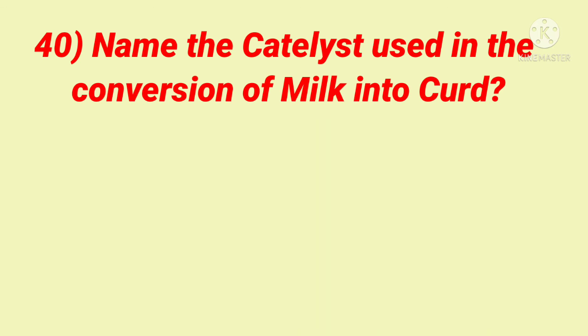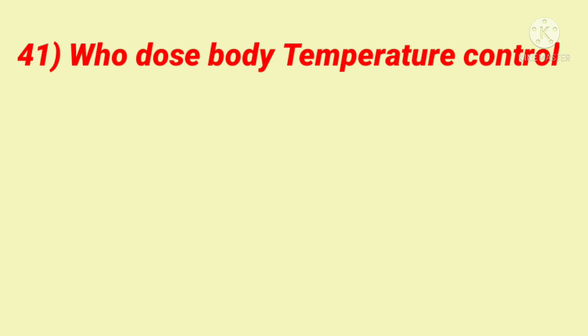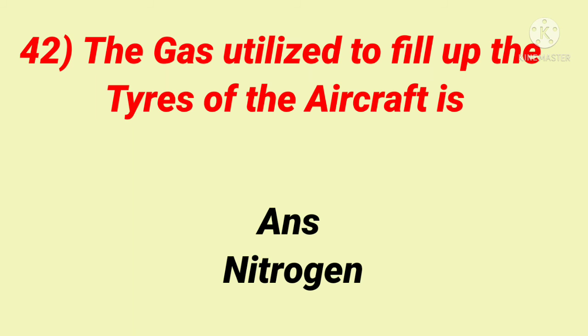Name the catalyst used in conversion of milk into curd. Lactase. Who controls body temperature? Hypothalamus. The gas utilized to fill up the tires of aircraft is nitrogen.